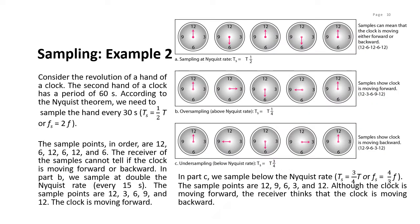Another example involves sampling a periodic event such as the revolution of the hand of a clock. The second hand of a clock has a period of 60 seconds. According to Nyquist theorem, we need to sample the hand every 30 seconds, because sampling frequency is inversely proportionate to sampling interval — Fs equals 2f means the sampling interval equals half of T, so 60 divided by 2 gives 30 seconds. In the first example, sampling at the Nyquist rate, the sample points in order are 12, 6, 12, 6, 12. From here, the receiver cannot tell if the clock is moving forward or backward.